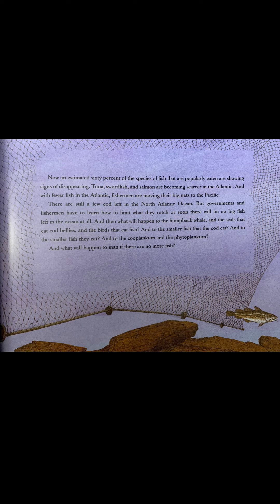Now, an estimated 60% of the species of fish that are popularly eaten are showing signs of disappearing. Tuna, swordfish, and salmon are becoming scarcer in the Atlantic. And with fewer fish in the Atlantic, fishermen are moving their big nets to the Pacific. There are still a few cod left in the North Atlantic Ocean, but governments and fishermen have to learn how to limit what they catch, or soon there will be no big fish left in the ocean at all.